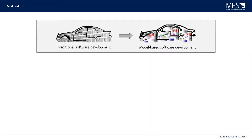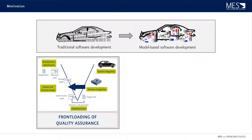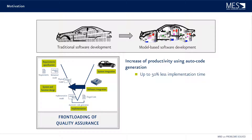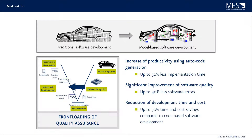MBD is state of the art for today's software development, especially in the automotive field. Increasingly complex software in cars has called for front-loading of quality assurance throughout the development cycle, and model-based development has shown that it can deliver. The increase in productivity using autocode generation can yield up to 50% less implementation time, significant improvement of software quality with up to 40% less software errors, and overall up to 30% time and cost savings as compared to code-based development.